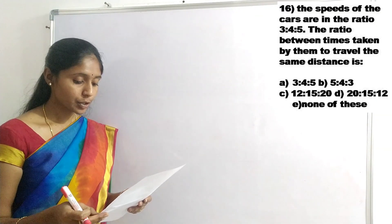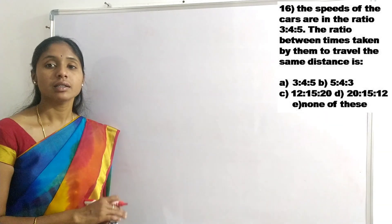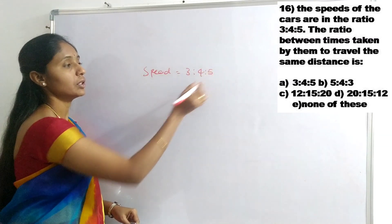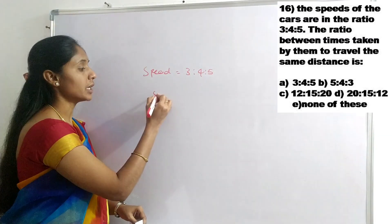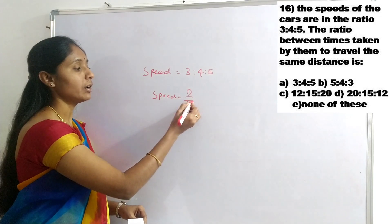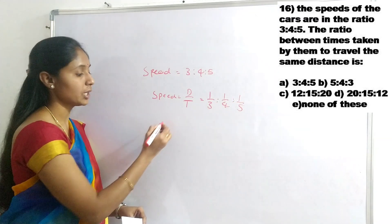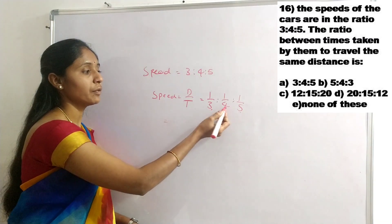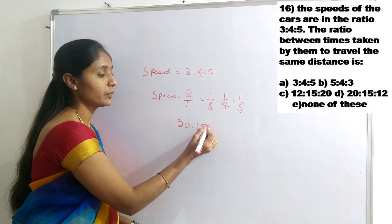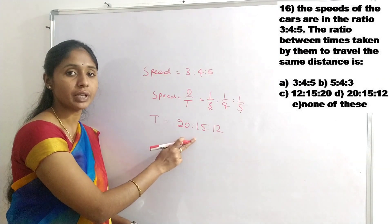Next question: The speeds of three runners are in the ratio 3:4:5. Find the ratio of times taken by them to travel the same distance. Since time is inversely proportional to speed, time ratio = 1/3 : 1/4 : 1/5. Taking LCM of 3, 4, 5 = 60: 60/3=20, 60/4=15, 60/5=12. So the time ratio is 20:15:12.